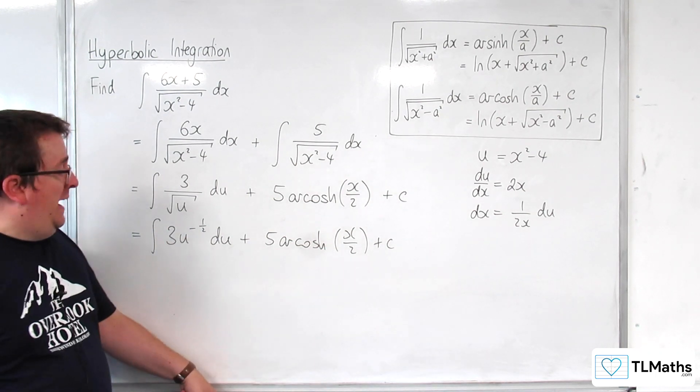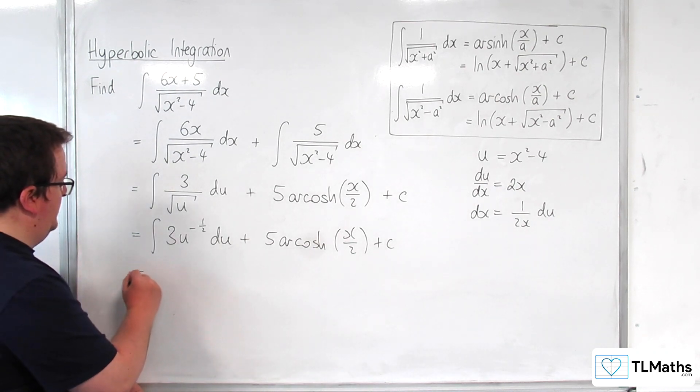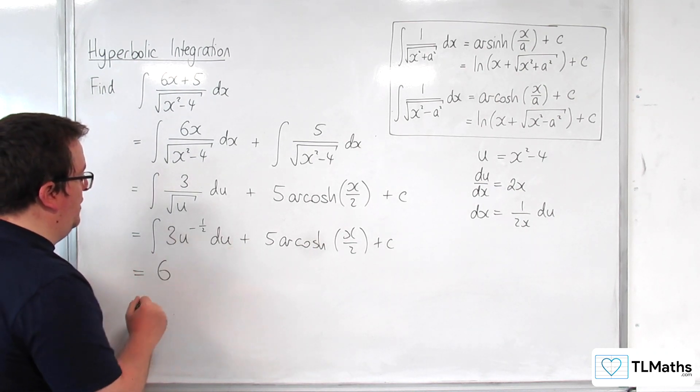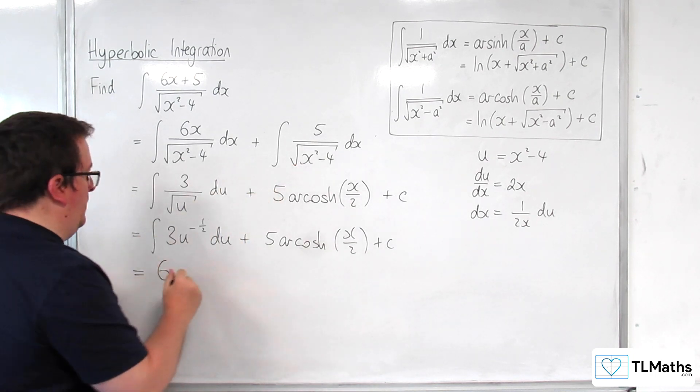So we're going to add 1 to the power divided by the new power. We're going to get 1 half divided by 1 half is 2 so 6u to the half and that's going to be x squared minus 4 rooted.